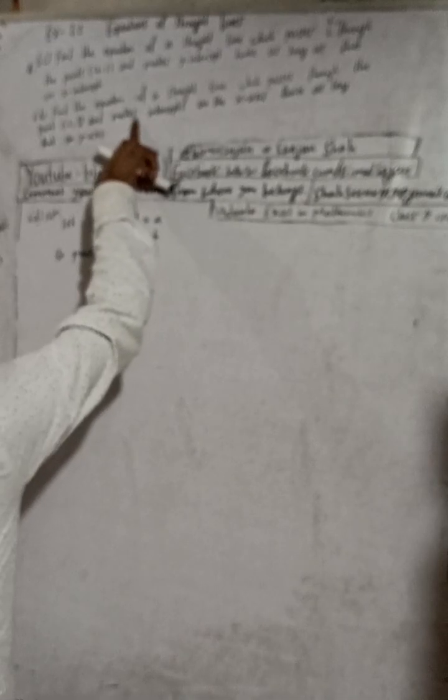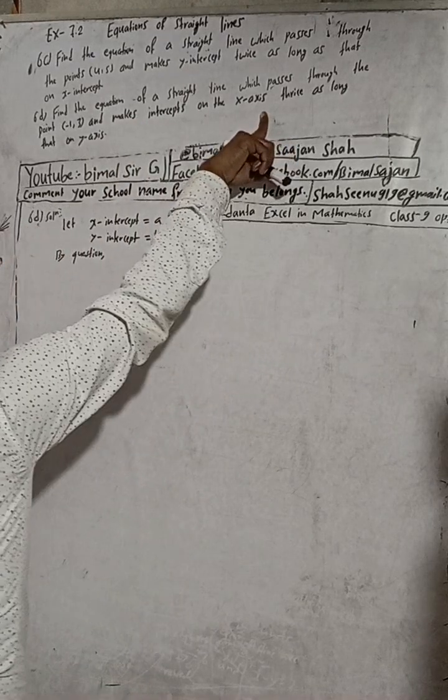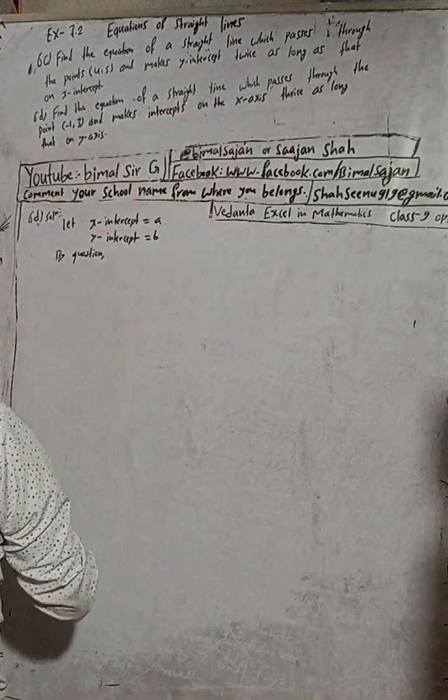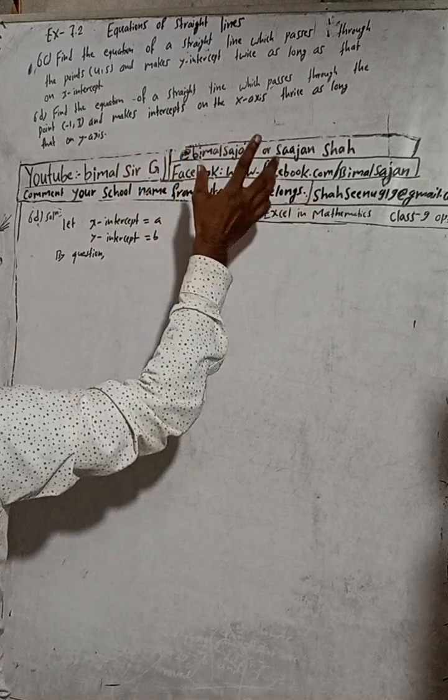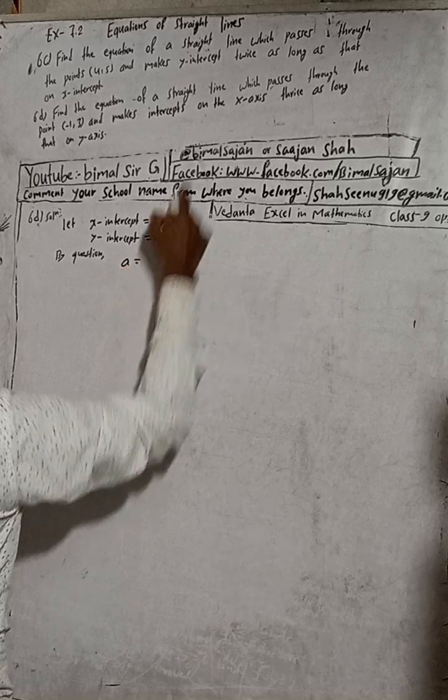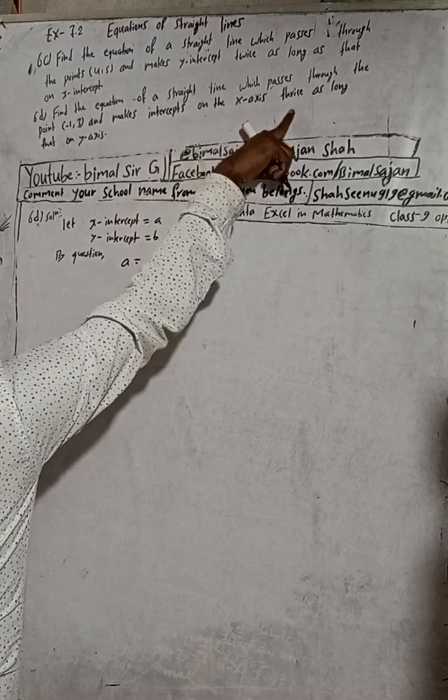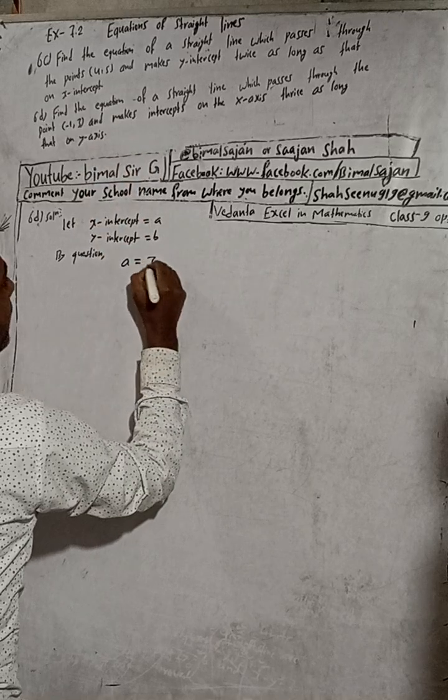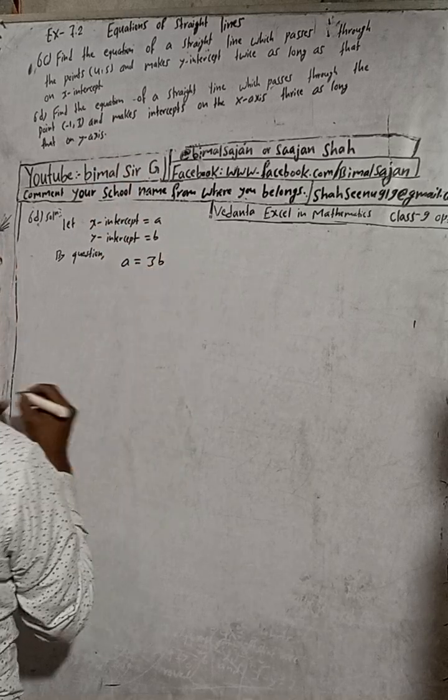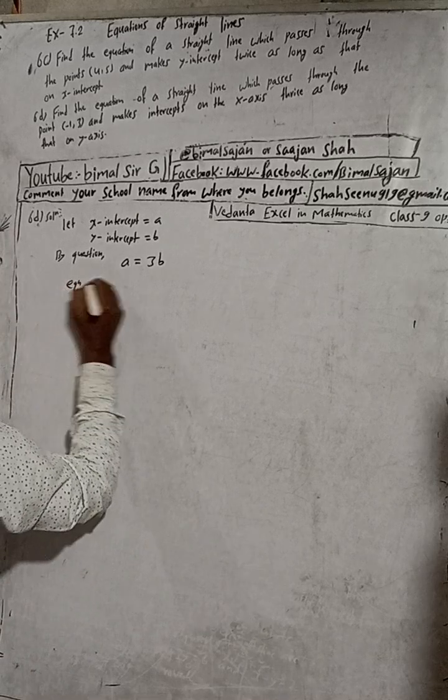Now by question, it makes intercepts on the x-axis thrice as long as y-axis. So intercept on the x-axis, which is a, is three times as long as intercept on the y-axis, which is b. So a equals 3b.